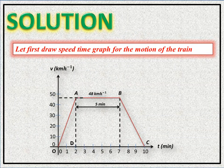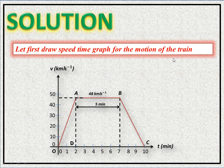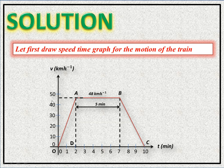First, let's draw the speed-time graph for the motion of the train. On the x-axis we have time in minutes, and on the y-axis we have velocity in kilometers per hour.